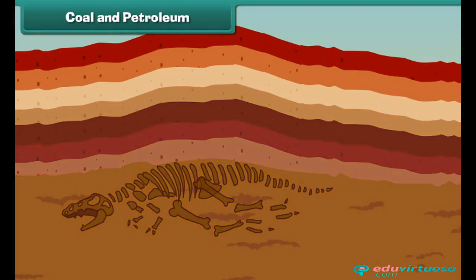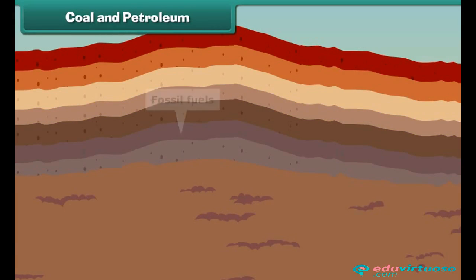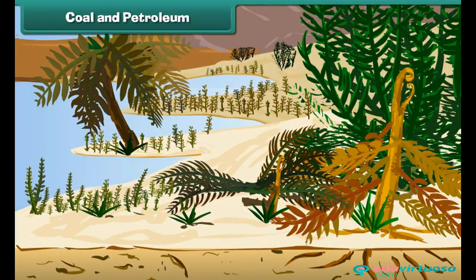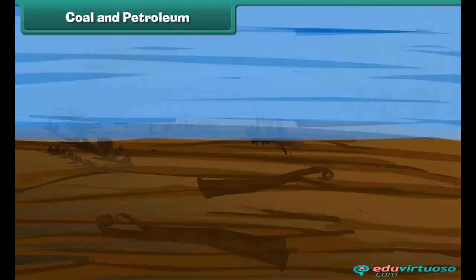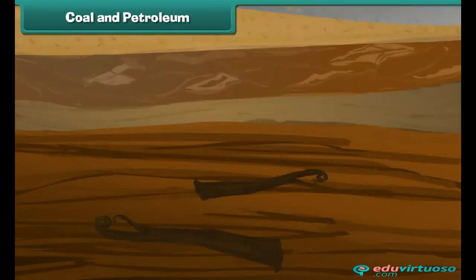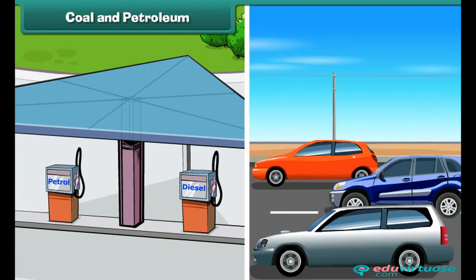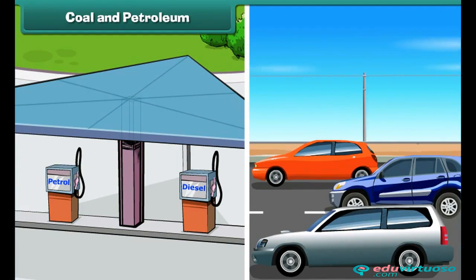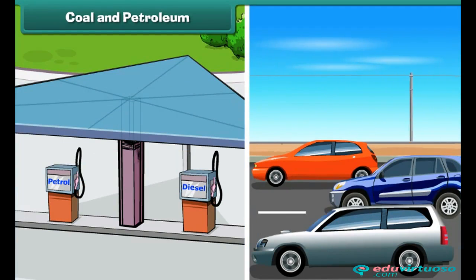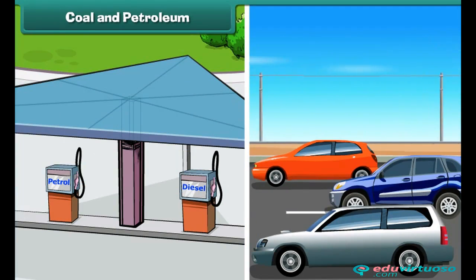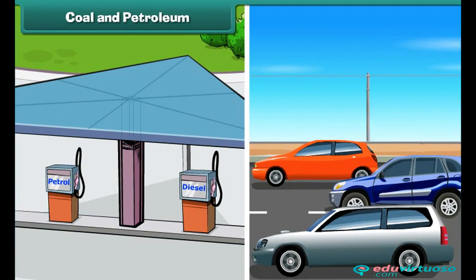Coal and petroleum are fossil fuels which take years to form. They are made from trees that get buried in the soil. They are non-renewable because they are limited in supply and can get exhausted by human overuse.